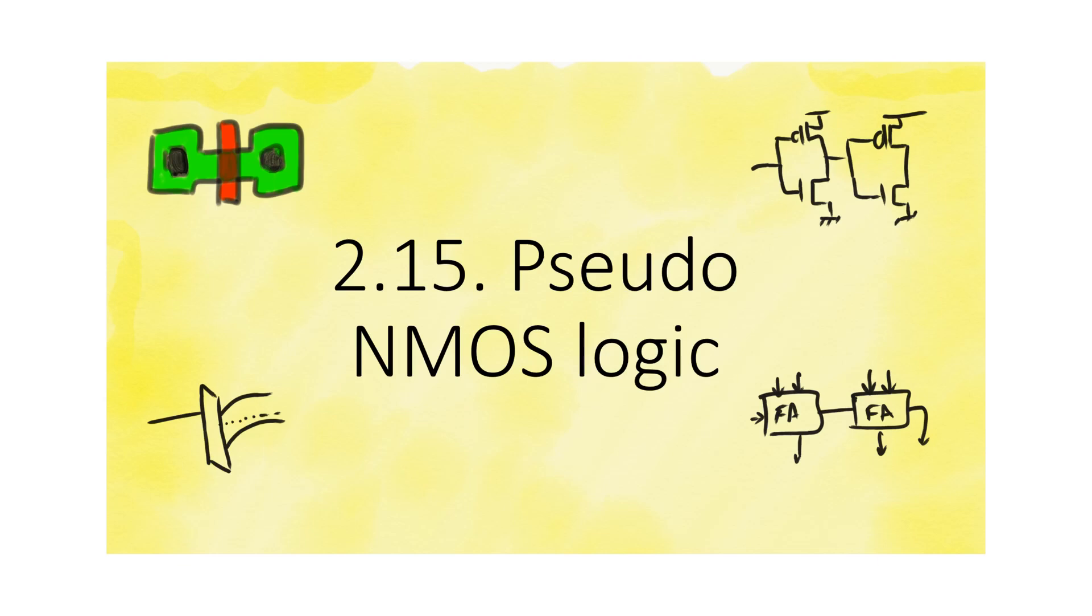Now we are going to look at another logic family in which we use yet another kind of load. In this case, the load will be a PMOS transistor whose gate is grounded. Recall that for PMOS transistors we use the same current equation as NMOS and the same inequalities. We just substitute for everything with the proper sign and for the inequalities we reverse the sense of the inequalities.